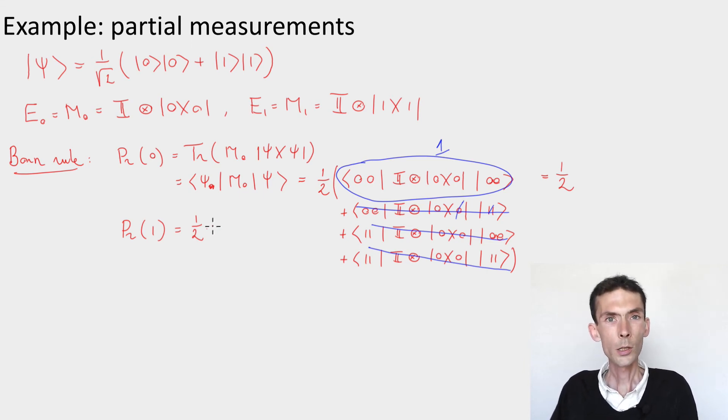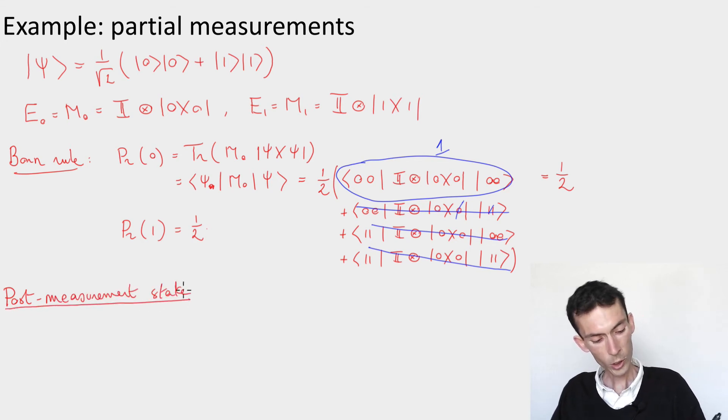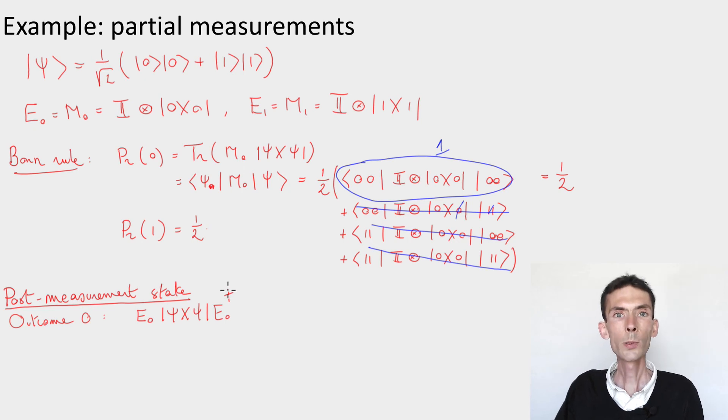So this we kind of knew. What we didn't know, however, is what are the post-measurement states. So that's the interesting part. And let's evaluate those using the rule that we saw. And that rule says that the post-measurement state associated, let's say, with the outcome 0, this should be simply renormalized, E₀|ψ⟩⟨ψ|E₀†, renormalized by the probability of the outcome 0, which here is a half, so I should divide this by a half. Now E₀ is equal to M₀, which is this identity tensor project the second qubit on 0.